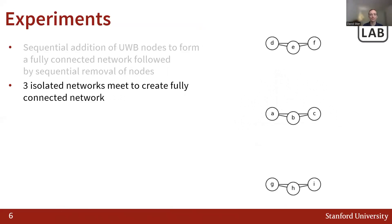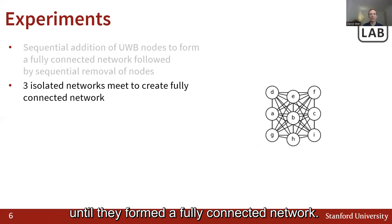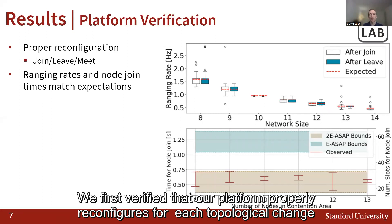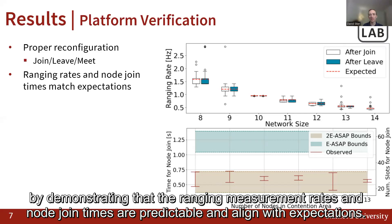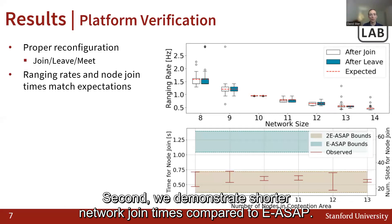In the second experiment, three initially isolated networks were moved closer together until they formed a fully connected network. We first verified that our platform properly reconfigures for each topological change by demonstrating that the ranging measurement rates and node join times are predictable and aligned with expectations.